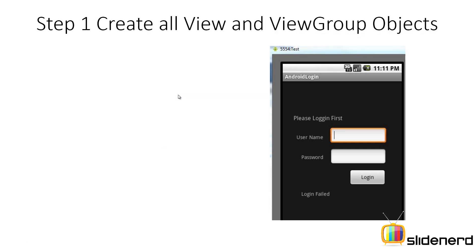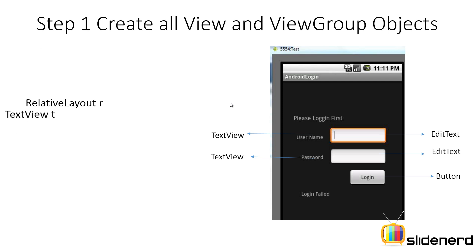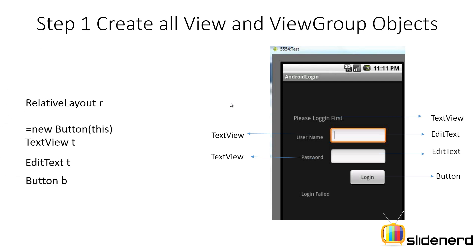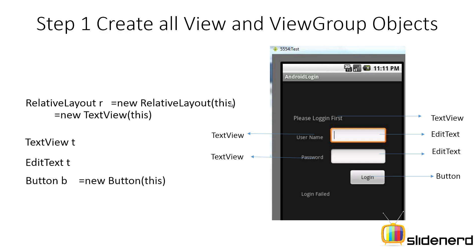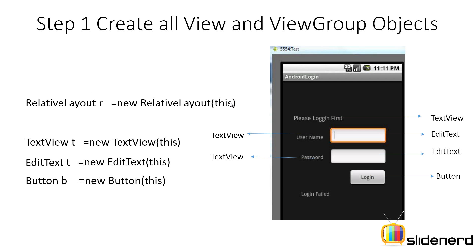Let me give a little more detail of each step. First: create all view and view group objects. Whatever is on the screen, create objects for each of them — relative layout, text view, edit text, button. For each of them you simply have to create objects by using their constructors. Now if you notice, all the constructors take something called 'this' as a parameter.